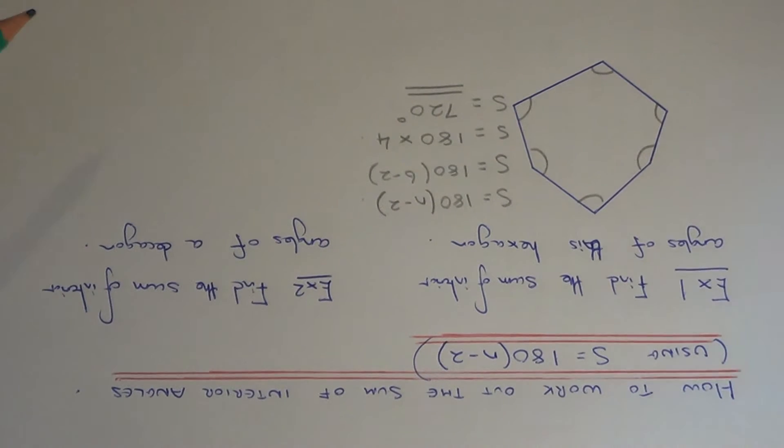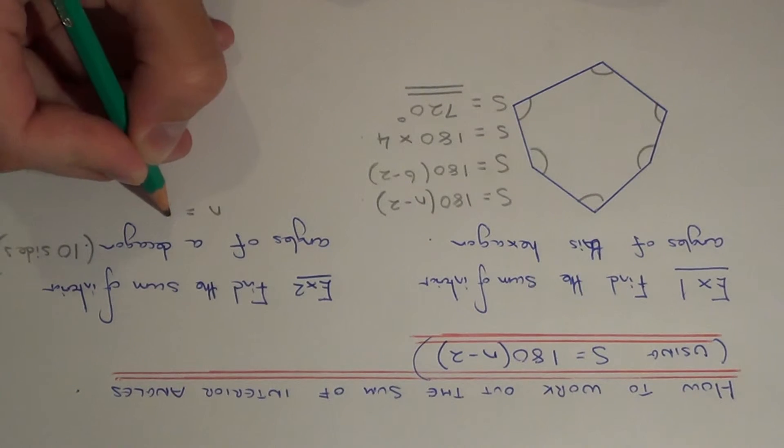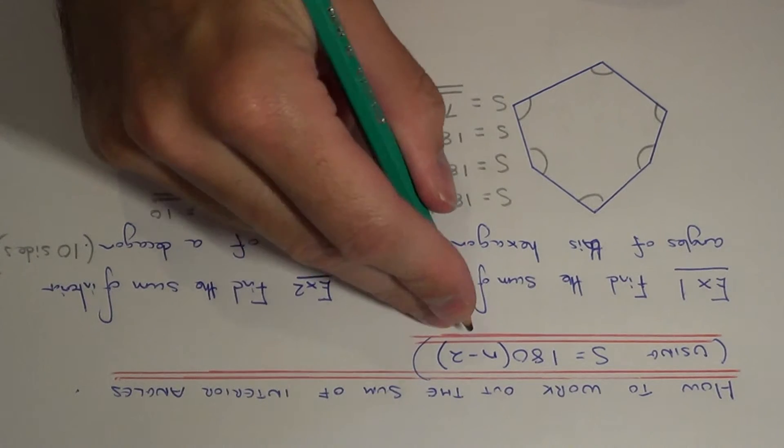So let's move on to our second example, so this time we need to work out the sum of interior angles of a decagon, so a decagon has 10 sides, so we need to sub in N equals 10 into this formula here.